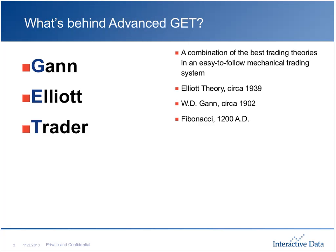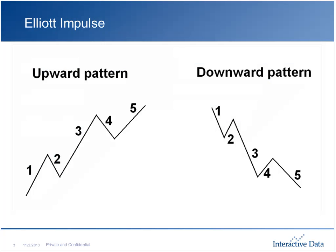Advanced Get is a multidisciplined platform, and what we're going to be doing is talking about a very particular aspect of it. The GET of Advanced GET is not random — it stands for GAN Elliott Trader. Today we're going to be focusing on the middle portion, the Elliott Wave part. Elliott Wave Theory was developed back in the late 30s and early 40s. It is a labeling system for the market.